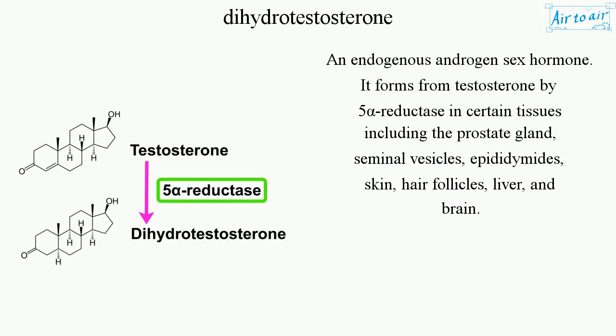It forms from testosterone by 5-alpha reductase in certain tissues, including the prostate gland, seminal vesicles, epididymides, skin, hair follicles, liver, and brain.